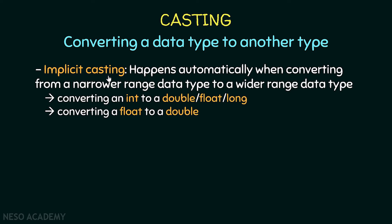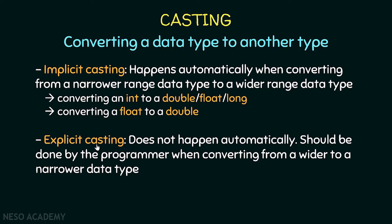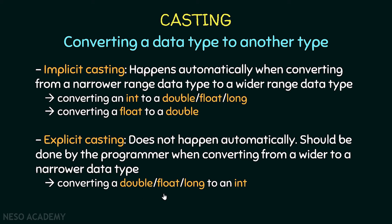You can also think of it this way: implicit casting happens when we can convert from one data type to another without losing data. Now, explicit casting doesn't happen automatically — it must be done by the programmer when converting from a wider range to a narrower range. For example, converting from a double to an integer might lose the decimal part of the number.